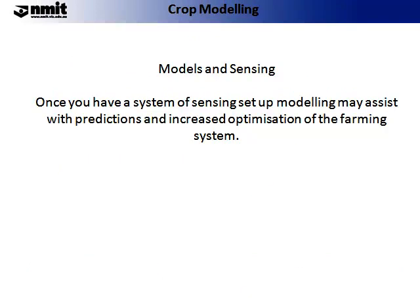In the previous topic on agricultural technologies we were looking at sensing. If you couple a sensing system on farm with modelling, it greatly assists with your predictions and the increased optimisation of your farming system. This may be how some future modelling components are undertaken — collecting real-time data from your farm environment so that you can optimise your responses to that specific climate.